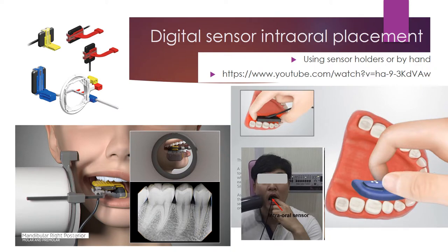Digital sensor placement inside the mouth can either be done by hand, asking the patient to hold it, or you can use universal dental sensor holders which we have in our clinic, or Rinn/CAVO holders which can aid in beam angulation as well as holding the sensor in place. All brands of sensors can fit into this universal sensor holder.